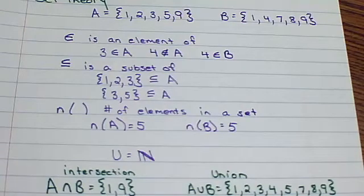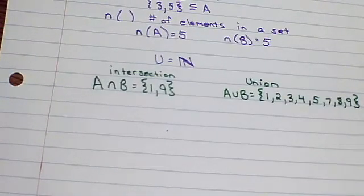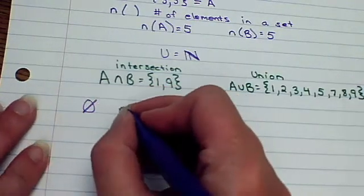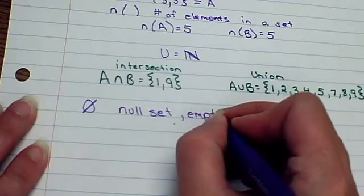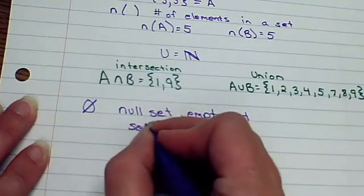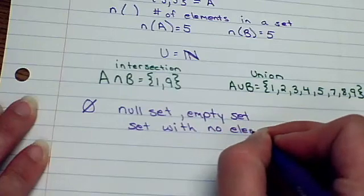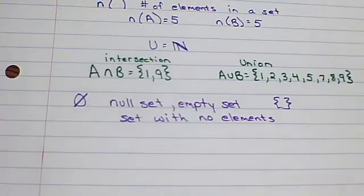Now let's see what else we can find. Some other notation you might want to be aware of. This is considered the null set or empty set. It is a set with no elements. It is empty. Okay, that one? That's easy.